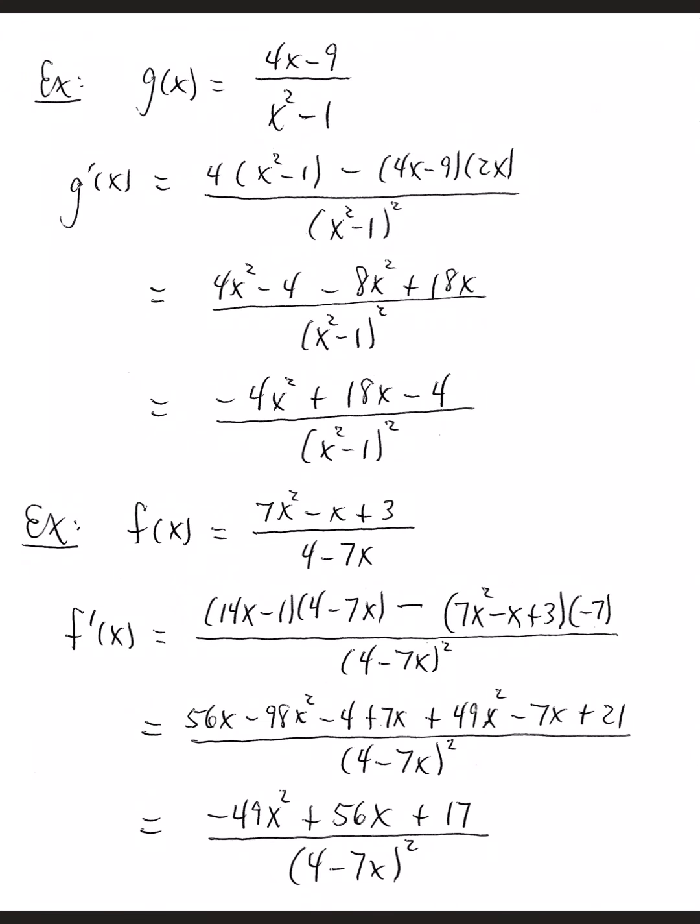Our third example, we have g of x defined as 4x minus 9 over x squared minus 1. Derivative of the numerator is 4 times the denominator left alone minus numerator left alone times the derivative of the denominator, which is 2x.